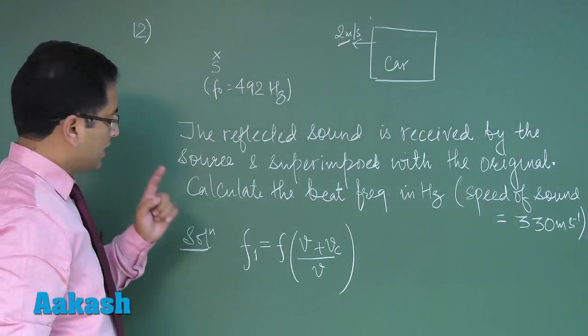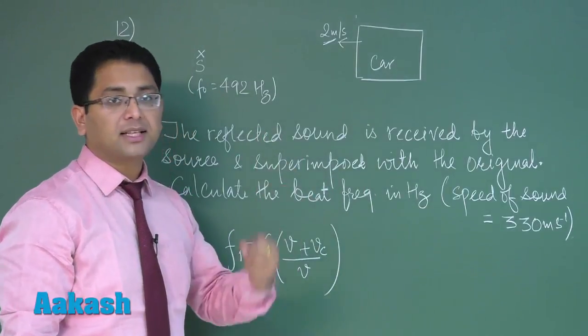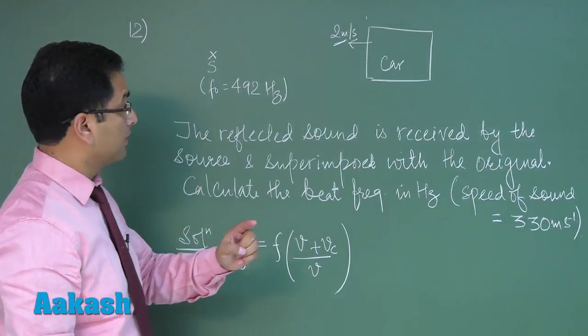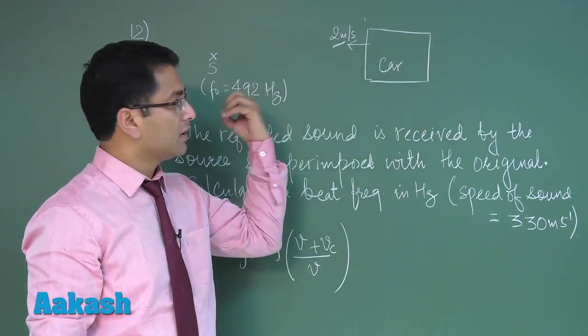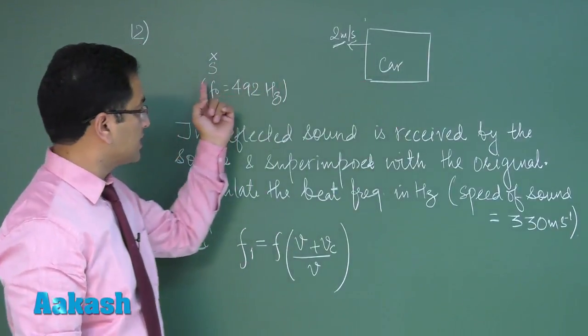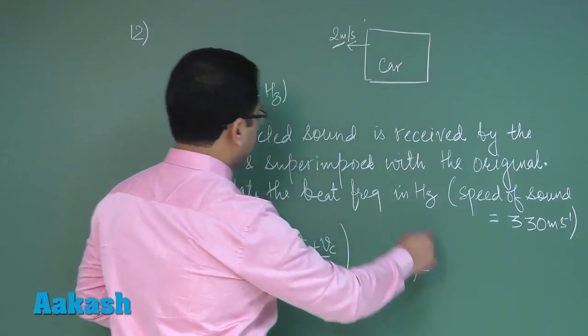Now, for the source, considering the reflected wave, the car will act as a source and this would act as a detector. So what is the frequency received by this detector? For this detector, the car is a source and that source's frequency is F1.